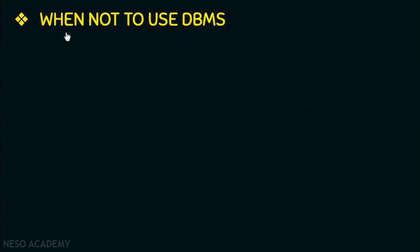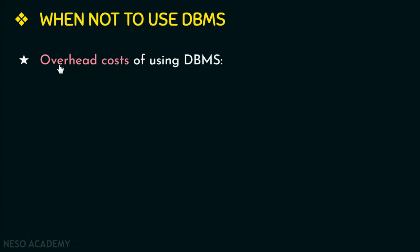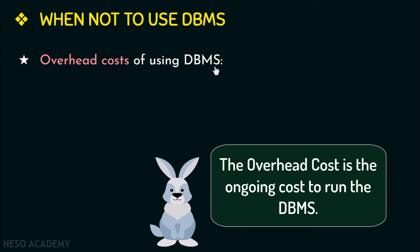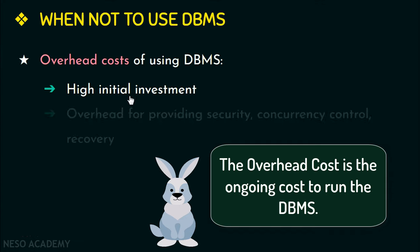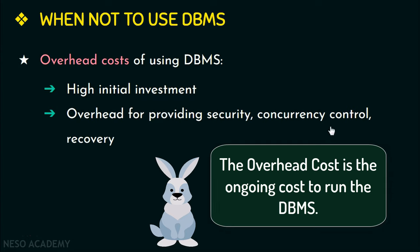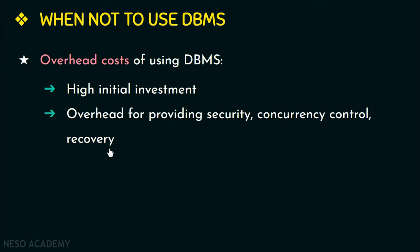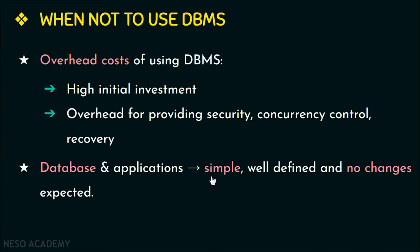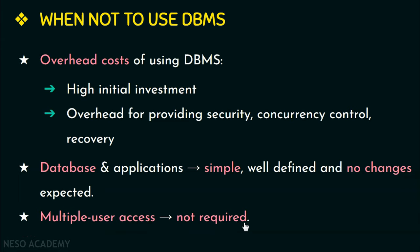Now let us look at the disadvantages of DBMS, or when not to use DBMS. Database systems may have overhead costs due to high initial investment in hardware, software, and training, plus ongoing overhead for security, concurrency control, and recovery. More problems arise if the database is not designed properly. We can use the regular file system instead when the database and applications are simple and well-defined with no expected changes, or when multiple user access is not required.